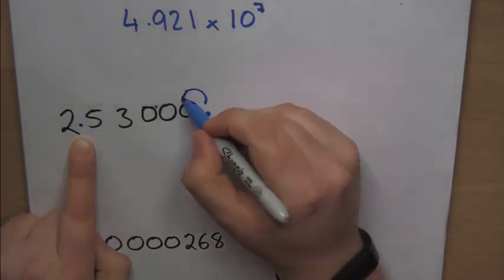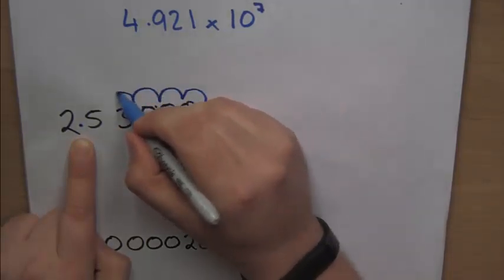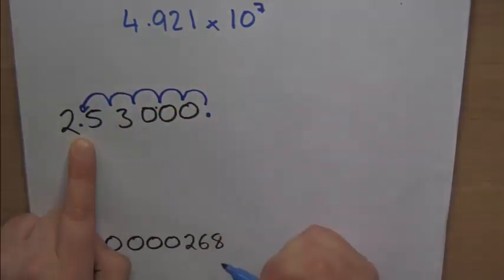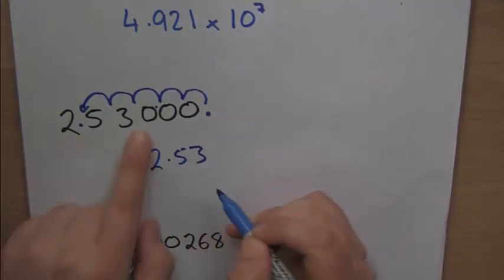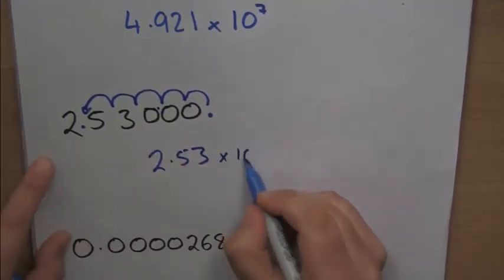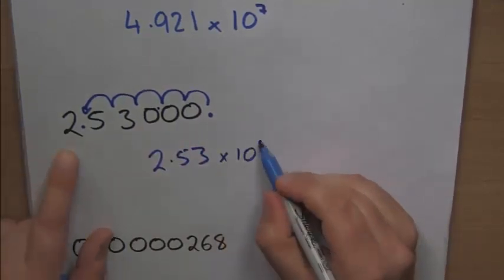Now, how many jumps has that been? That's 1, 2, 3, 4, 5 jumps. So it's 2.53, ignoring the rest of the zeros, times 10 to the power of 5.